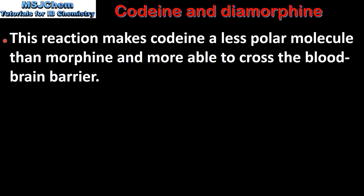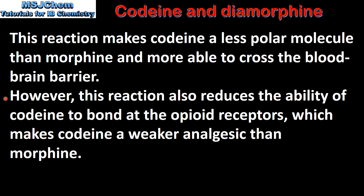This reaction makes codeine a less polar molecule than morphine and more able to cross the blood-brain barrier. However, this reaction also reduces the ability of codeine to bond at the opioid receptors, which makes codeine a weaker analgesic than morphine.